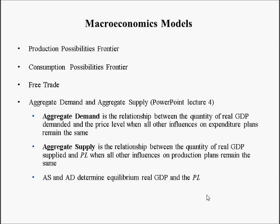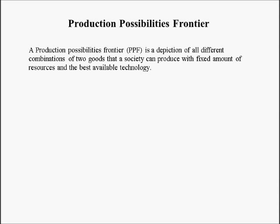Now we're going to look at macroeconomic models. In the context I'm going to discuss them, macroeconomic models include things like production possibility frontiers and consumption possibility frontiers. I'm also going to apply the production possibility frontier to illustrate the benefits of free trade. A production possibility frontier is a depiction of all different combinations of two goods that a society or an economy can produce with a fixed amount of resources and the best available technology.